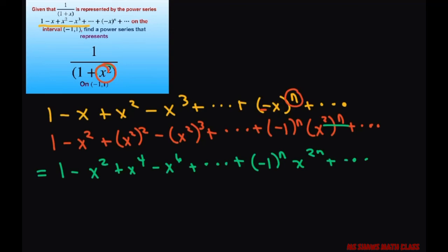Alright. This series is convergent for negative 1 is less than x squared is less than 1. This is equivalent to negative 1 is less than x is less than 1. So the interval of convergence is negative 1 to 1.